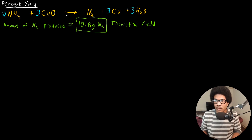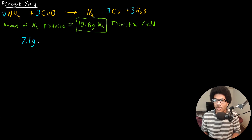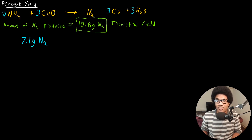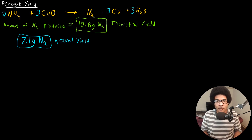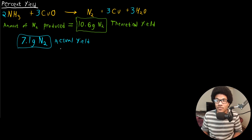For example, let's say you go into a lab and actually do this reaction, and you get 7.1 grams of N2 — you weigh out the gas and that's the amount you produce. This is what we call the actual yield. There's no way to calculate the actual yield from stoichiometry; you either have to do the reaction yourself, or the problem tells you how much was produced in the actual experiment. So you have an actual yield and a theoretical yield.